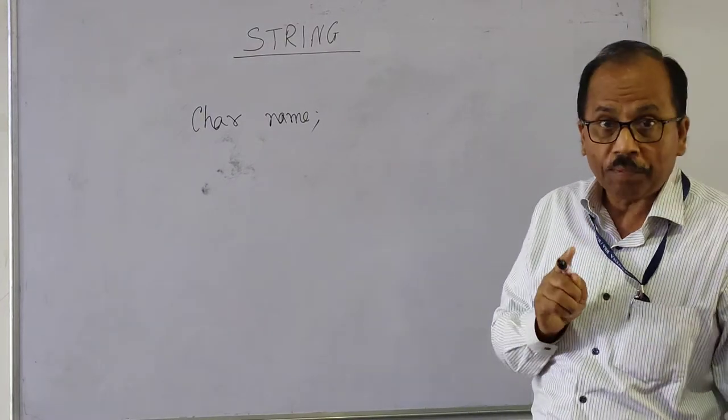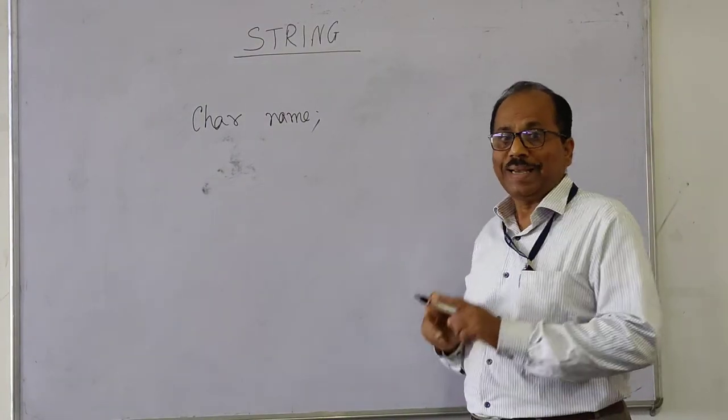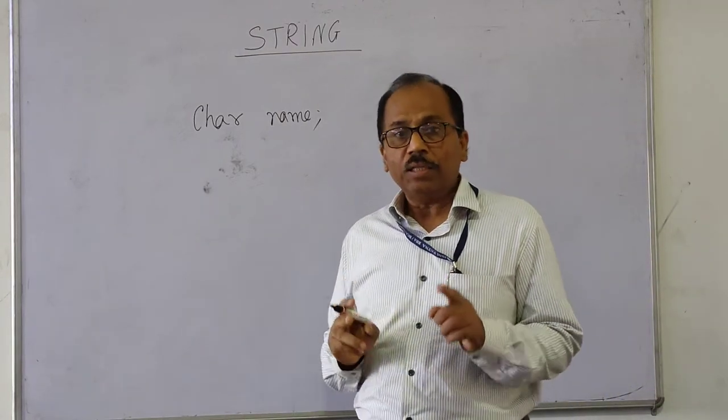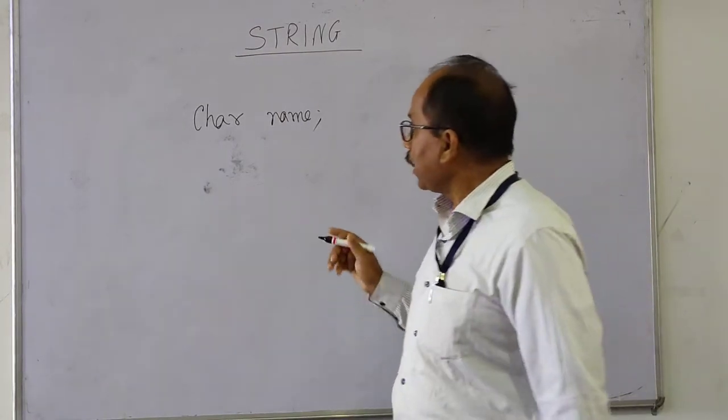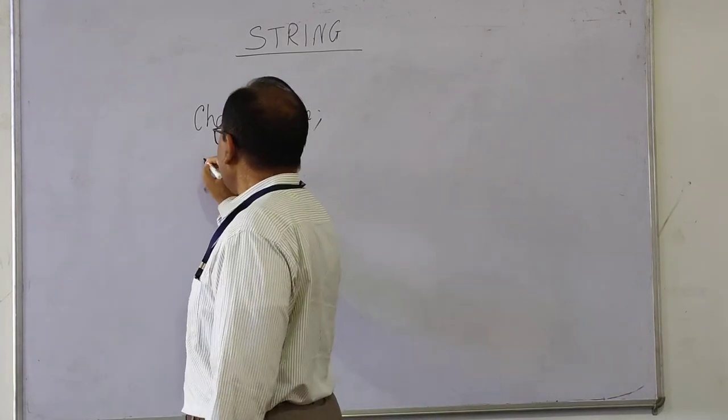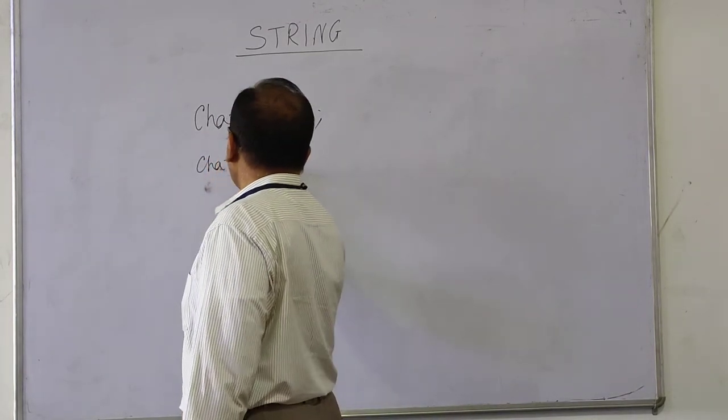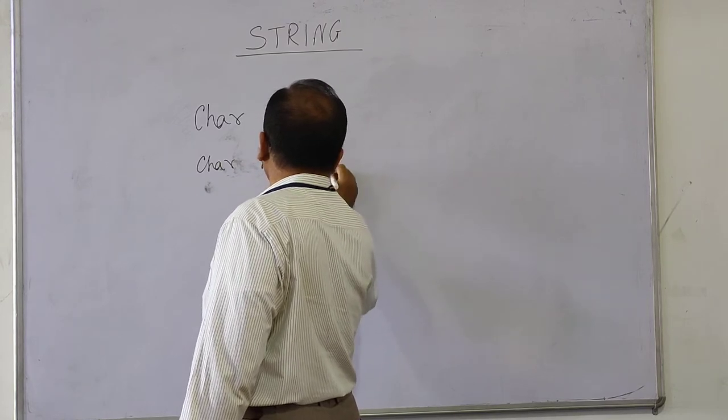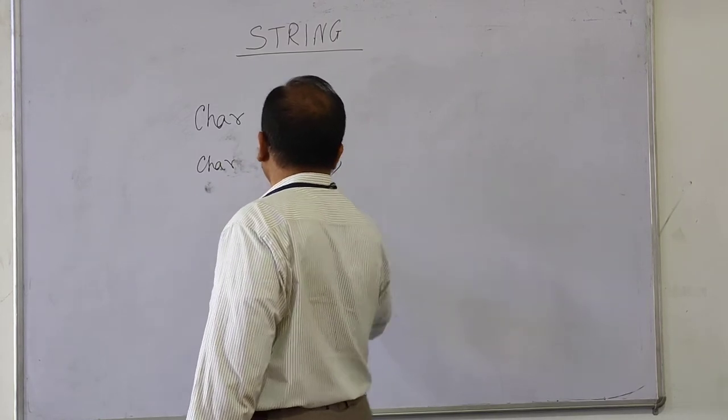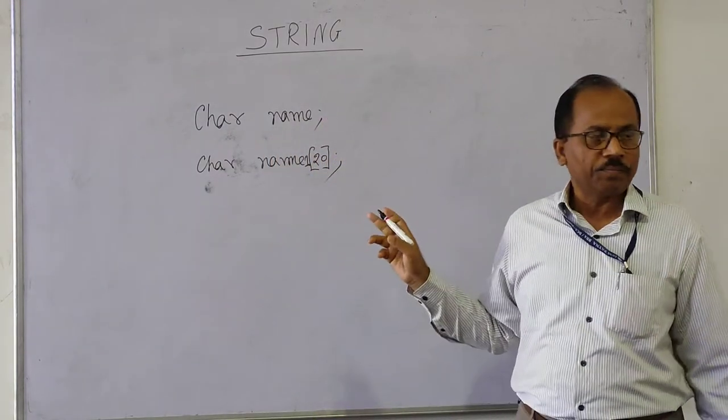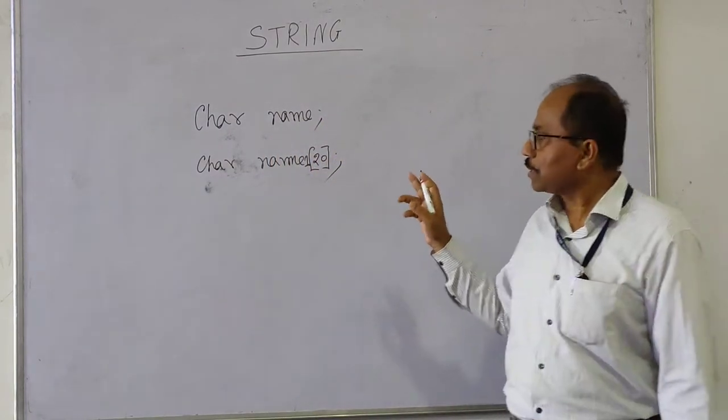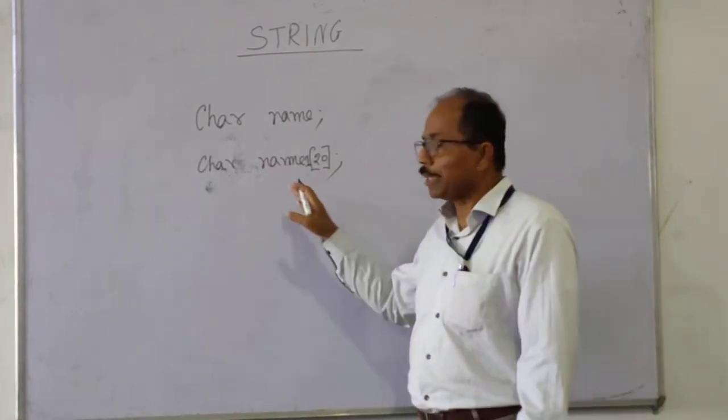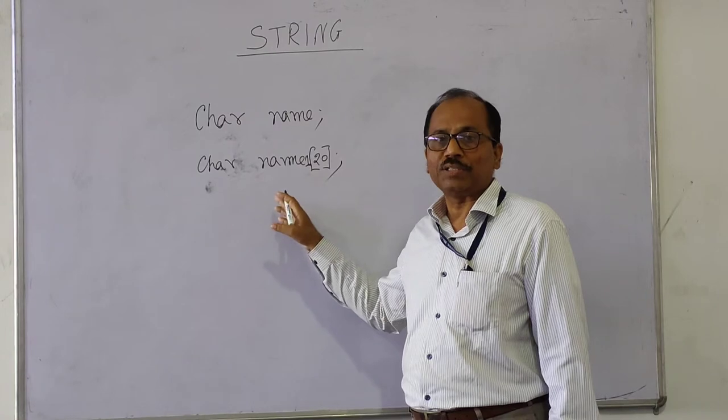Whereas, if you have to store an entire set of name characters, then you declare it like char name1[20]. This second declaration uses a square bracket containing a number.